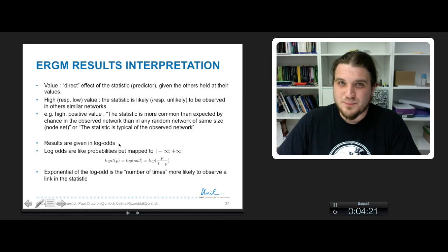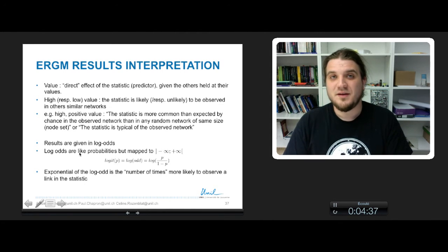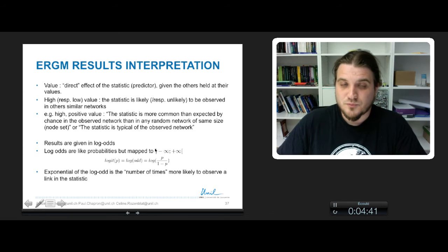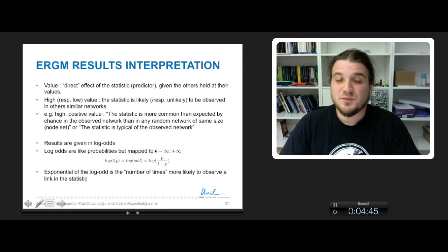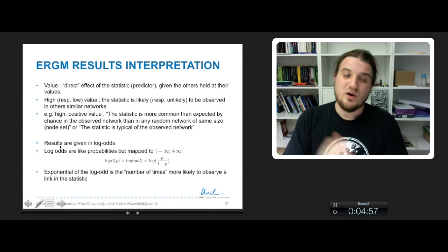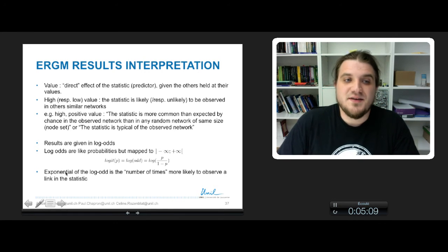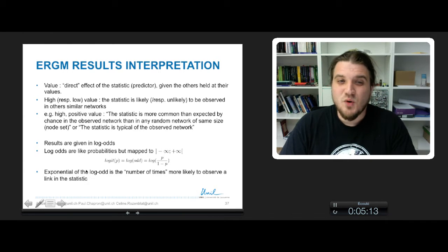As I was saying, results are given in log-odds. Log-odds is a useful way to change a probability to a real value. The probability is between 0 and 1. A log-odds maps the probability value between minus infinity and plus infinity. The probability of observing a statistic is monotonic with the value of the log-odds. High values of log-odds means high probability to observe the statistics, low values of log-odds, so negative values, means small probability to observe the statistic. When you take the exponential of these values, you have the number of times the statistic is more likely to observe a link in the statistic.